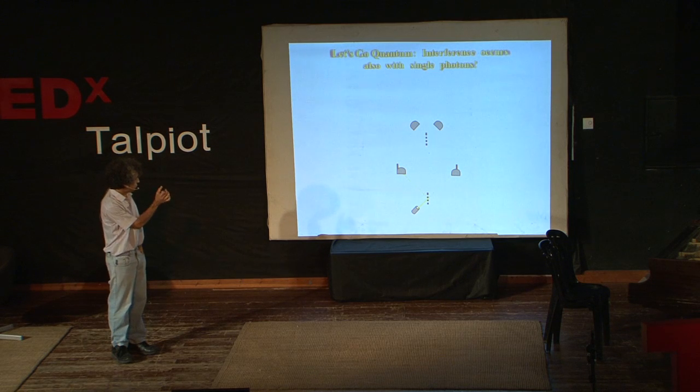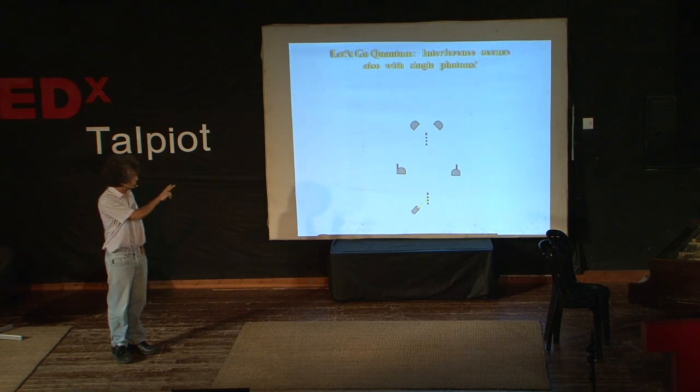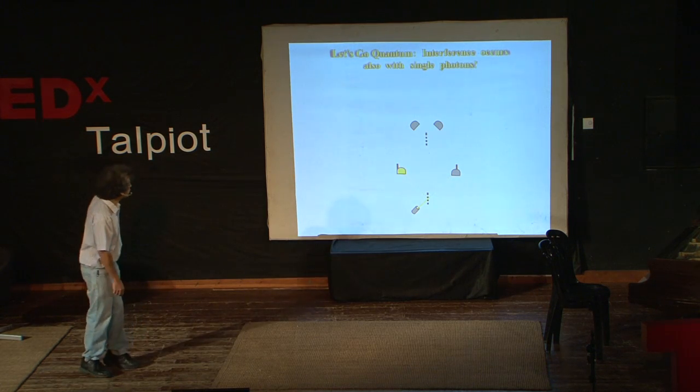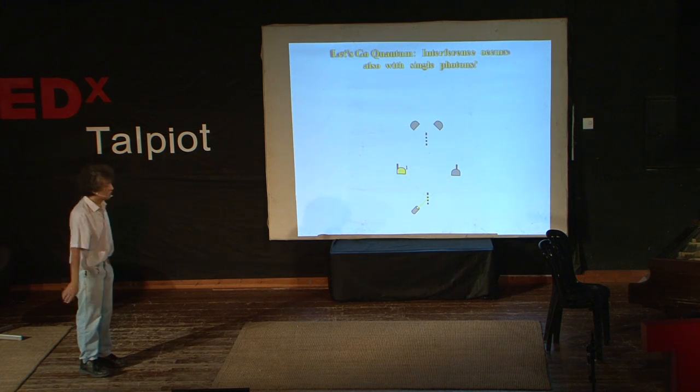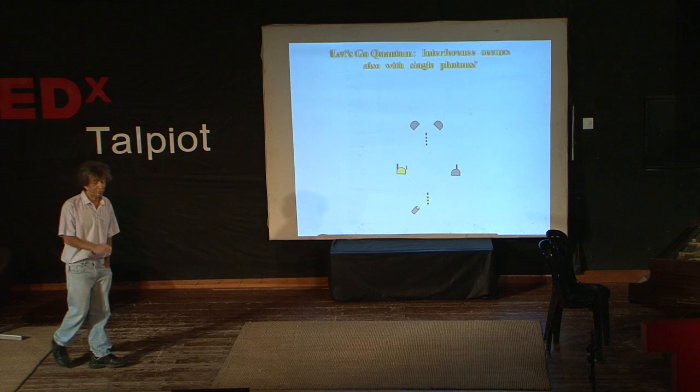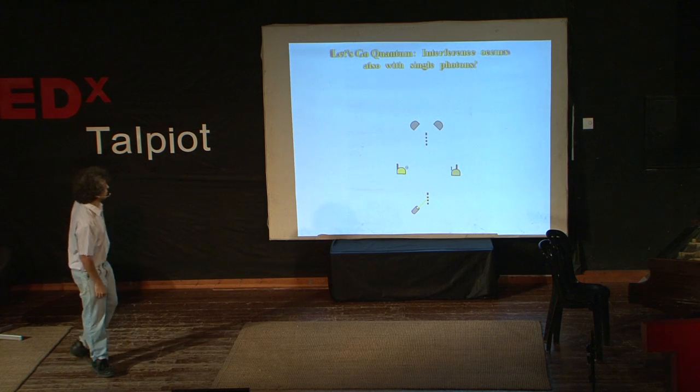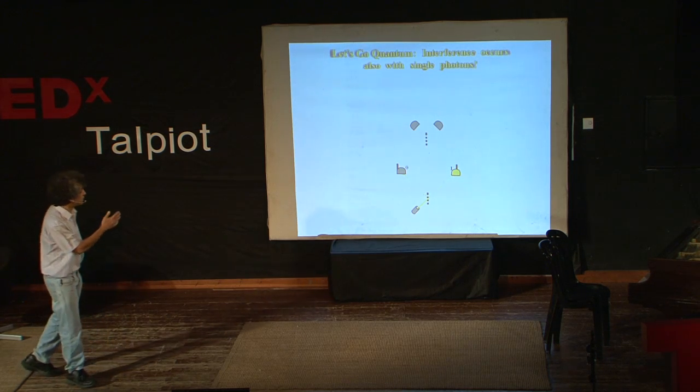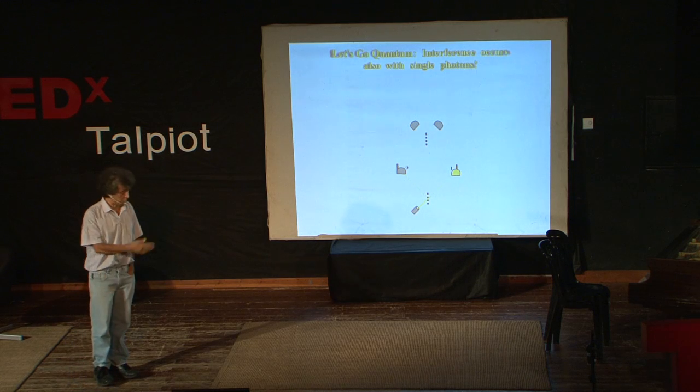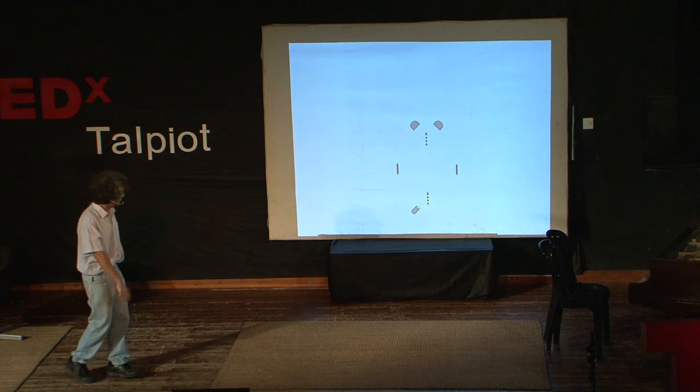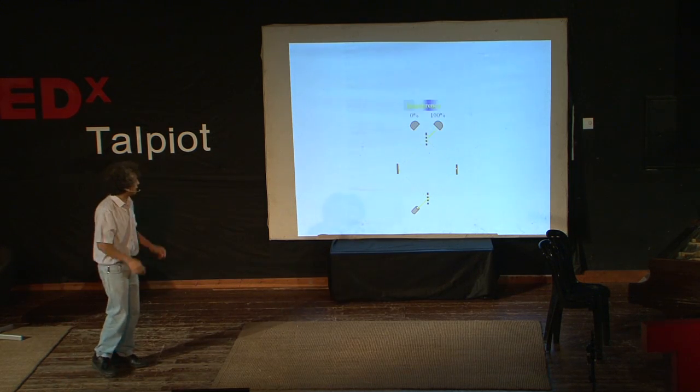Amazingly, if you put two detectors on the two possible paths of a single photon, always one of them clicks, which means that there was one photon, never half a photon, on that side, zero on the other, or conversely, zero on this side, nothing, and one on the other. It is only when you remove them in which you see, again, interference.